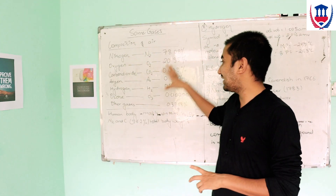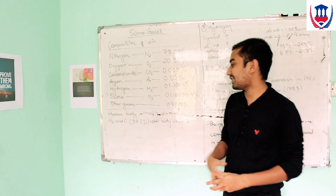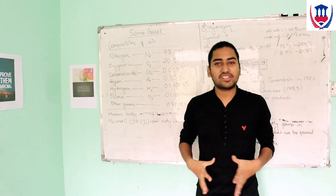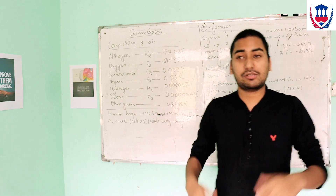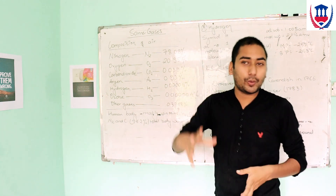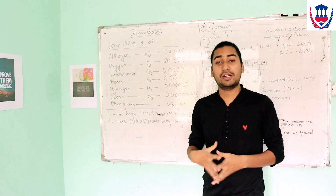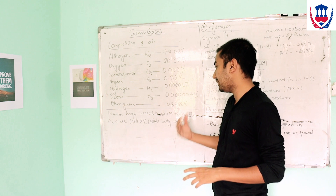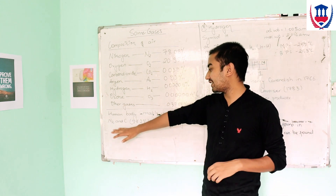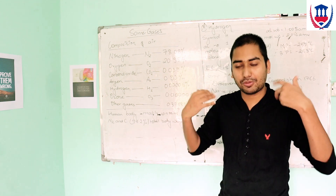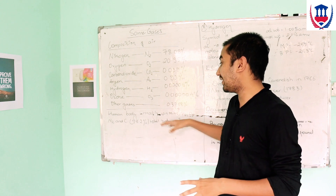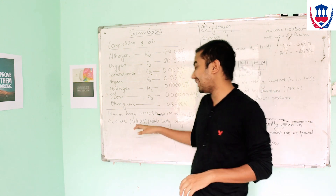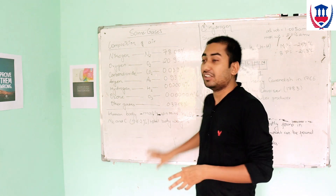In the human body, the main elements are hydrogen, oxygen, nitrogen, and carbon, making up around 96.2% of the body's composition. Water makes up about 70–71% of the body, consisting of hydrogen, oxygen, and carbon.